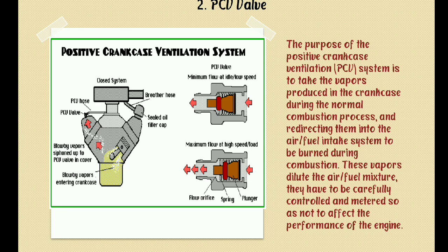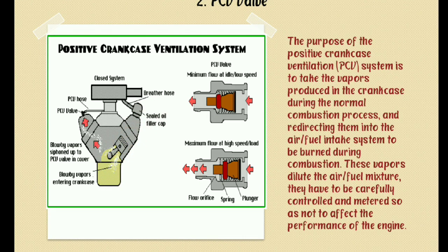Due to wear and the gap between the piston rings and the cylinder, unburnt air-fuel mixture from the combustion chamber leaks out to the crankcase. This action is called blow-by gas or blow-by action. The major portion of these blow-by gases in the crankcase consists of unburnt fuel hydrocarbons. These blow-by gases are released to the atmosphere through a pipe from the crankcase called the breeder hose.